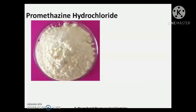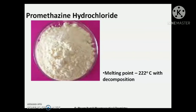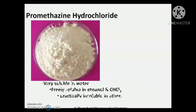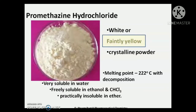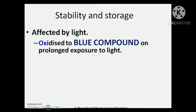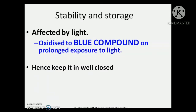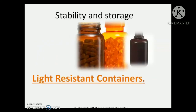Coming to the physical properties of Promethazine hydrochloride: it is a white or faintly yellow crystalline powder with a melting point of 222 degrees centigrade. It is very soluble in water, freely soluble in ethanol and chloroform, and practically insoluble in ether. It is a light-sensitive compound — it is oxidized to a blue-colored compound on prolonged exposure to light — and hence it should be stored in well-closed light-resistant containers.